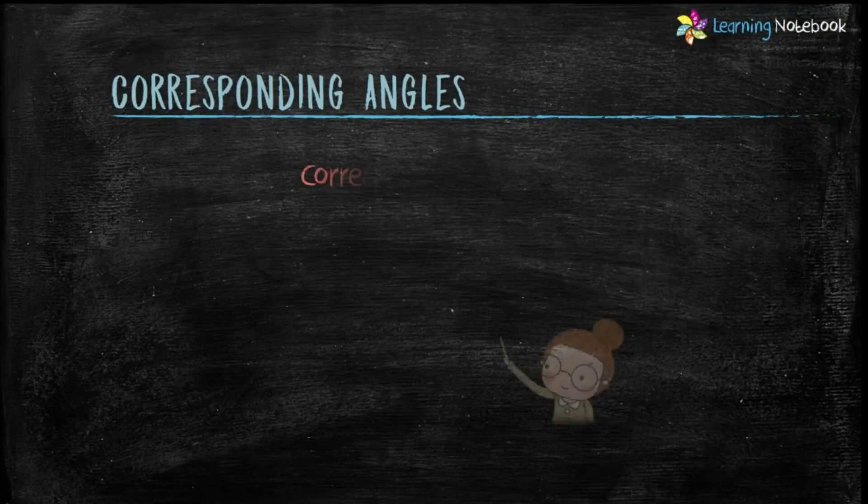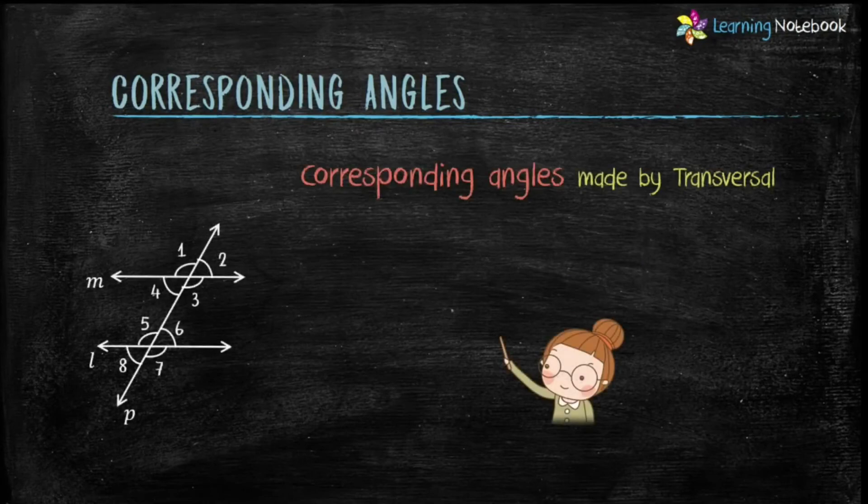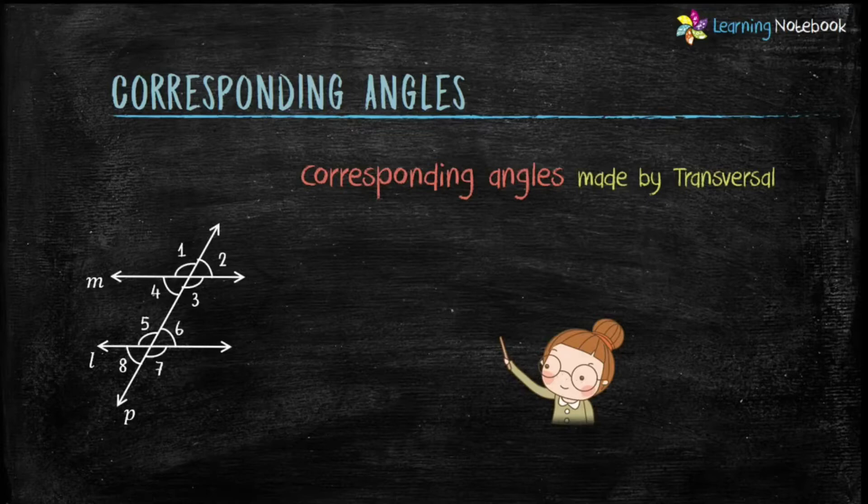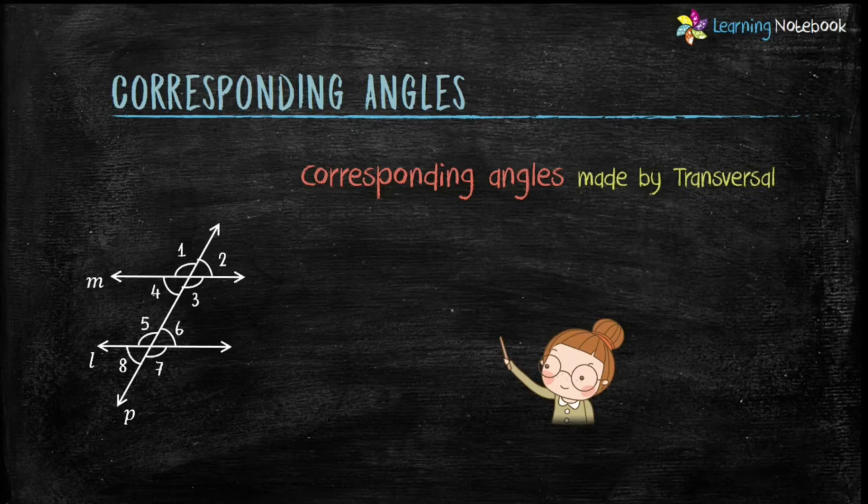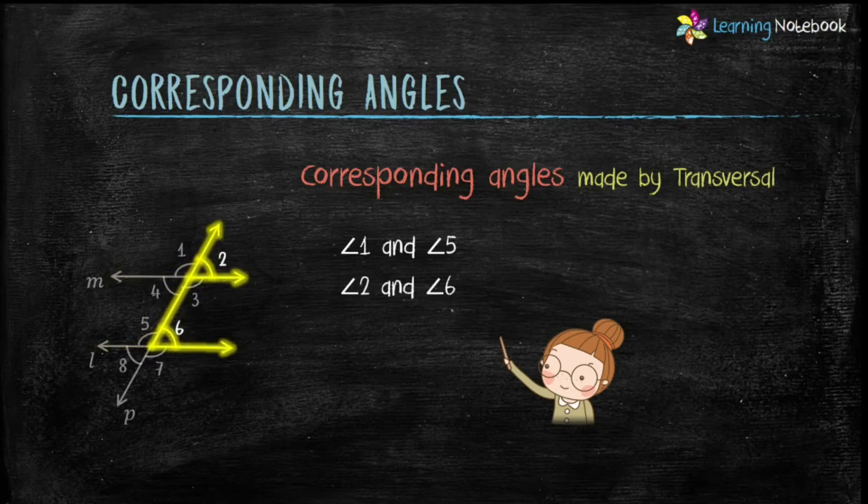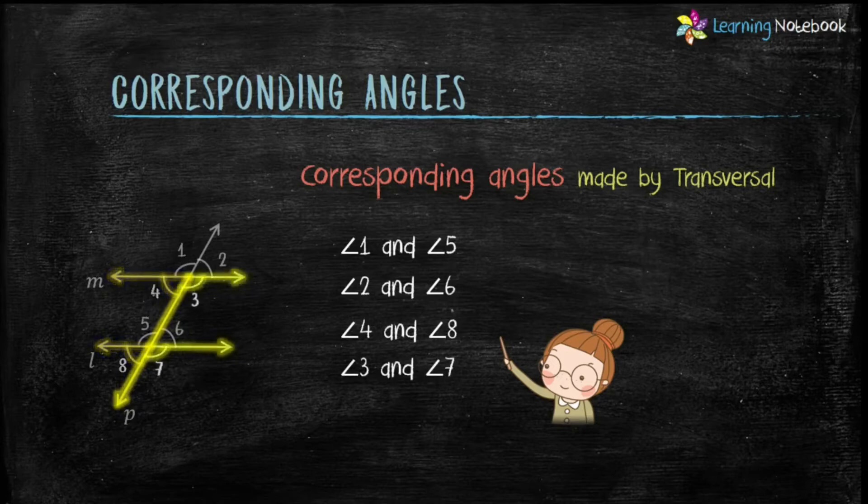Let's first quickly revise what are corresponding angles made by a transversal. Here, M and L are two parallel lines and P is the transversal. So, angle 1 and angle 5, angle 2 and angle 6, angle 4 and angle 8, and angle 3 and angle 7 are corresponding angles.